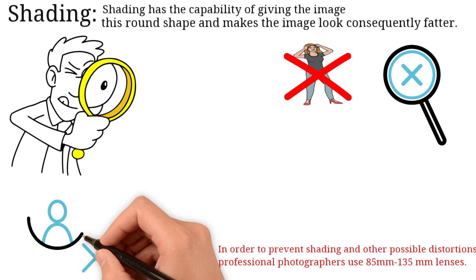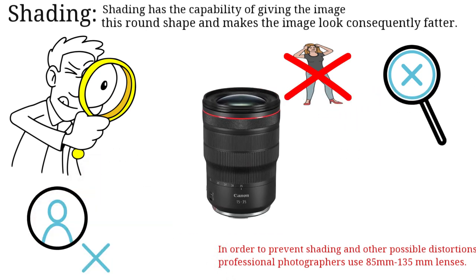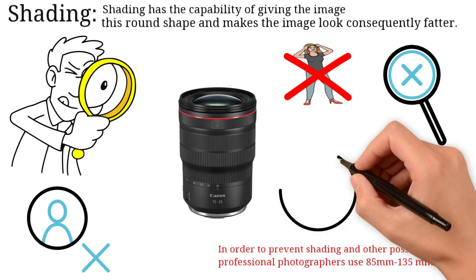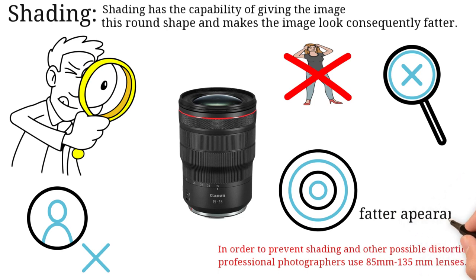Focal length is not the only feature that matters when it comes to shading in pictures. What also matters is the lens thickness. Shading effects can also be caused by a higher lens thickness and expand objects in the picture, thus giving them a fatter appearance.